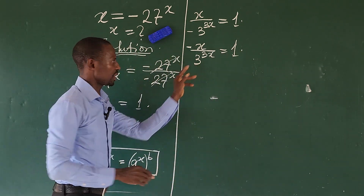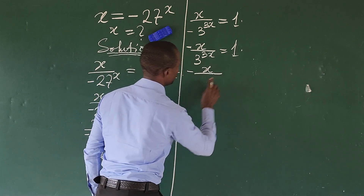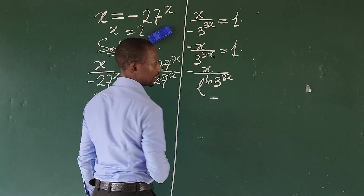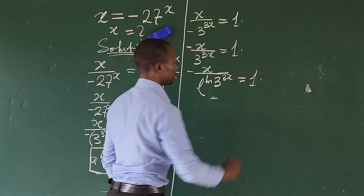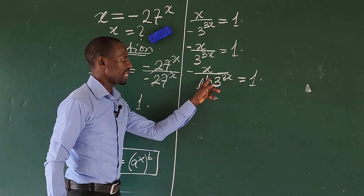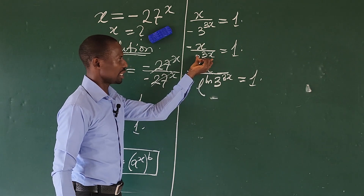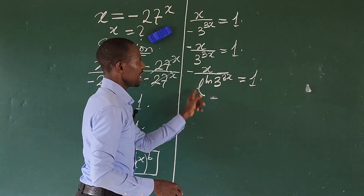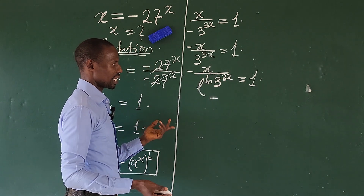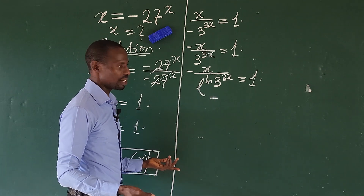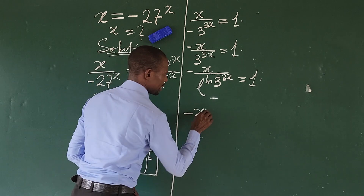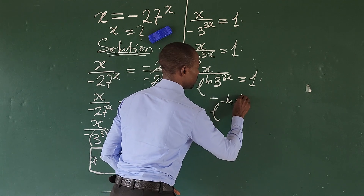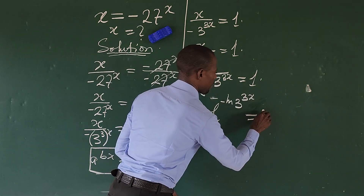I can rewrite this expression as minus x over e to the power of ln(3^(3x)), which still equals 1. This is valid because e to the power of ln of something simply returns that something. Now I want to move the denominator to the numerator, and when I do that, the exponent picks up a minus sign, giving us minus x times e to the power of minus 3x·ln(3) equals 1.